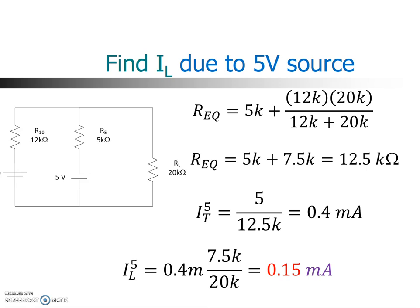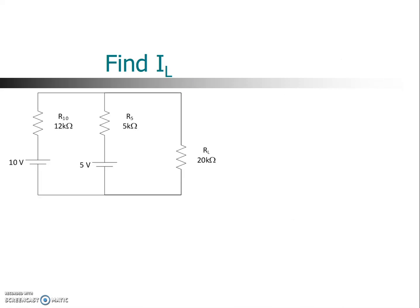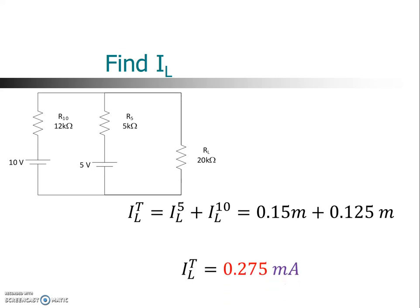Now superposition says the total current through the load due to both sources is the current from each individual source added together. So we take those two values and add them together, 0.15 milliamps and 0.125 milliamps, and we get a value of 0.275 milliamps. So again, the load current in total, that's for both sources, is 0.275 milliamps. That's our final answer.